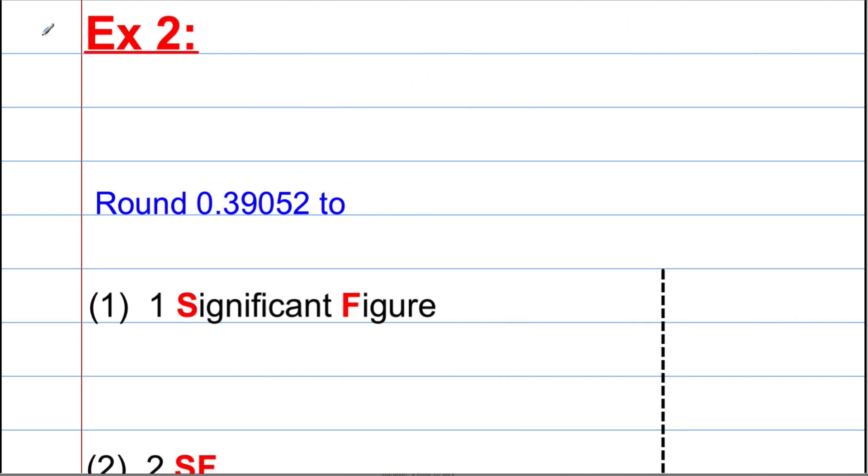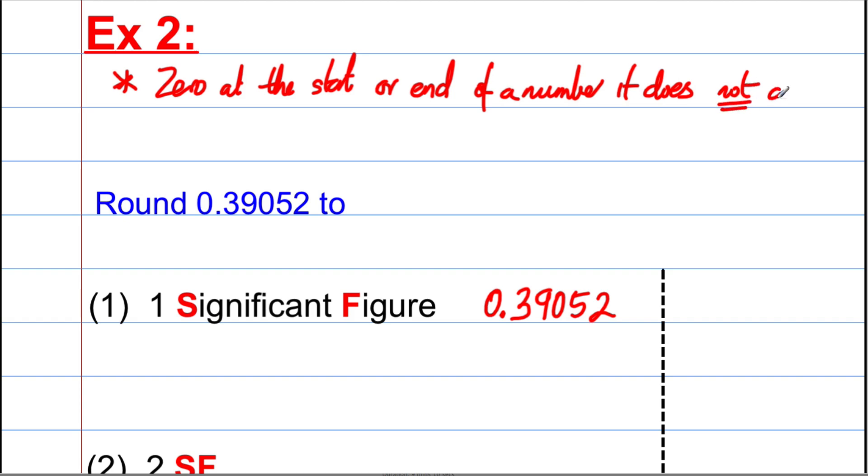Let's do one more example. Example two here. We want to round this number here to the following significant figure. So write it down, 0.39052. Now, here's a rule for us.